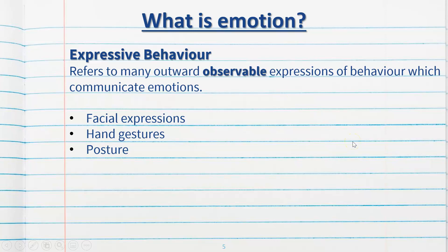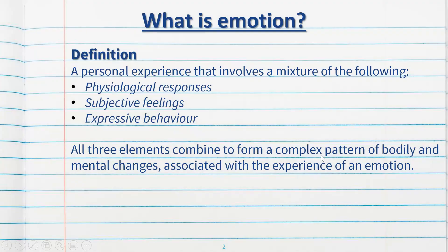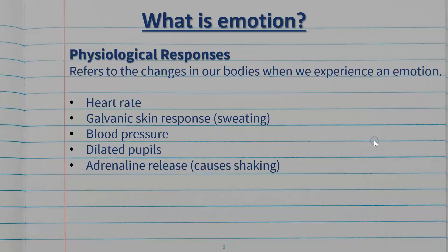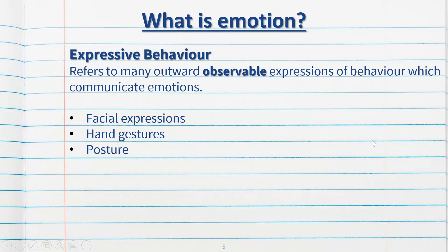It's important to mention that in order to analyze or measure emotions accurately, we need to take all three elements into account. It's not always reliable or valid to solely look at someone's behavior and make an accurate assumption of what they may be feeling, because people can lie. People can be smiling but feeling very, very sad — their expressive behavior and subjective feeling are at odds with one another. That's why we need to look at all three elements — physiological responses, subjective feelings, and expressive behavior — to assess and study emotion as accurately as possible.